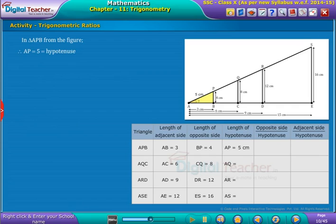Now, as we know all the sides of triangle APB, we can find out the ratio of opposite side to hypotenuse side and ratio of adjacent side to the hypotenuse side as shown on the screen. Similarly, in triangle AQC, the adjacent side is 6 cm and its opposite side is 8 cm.